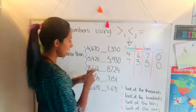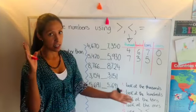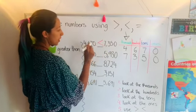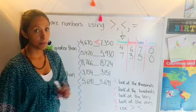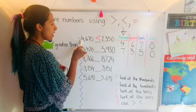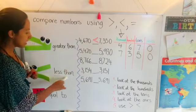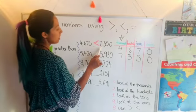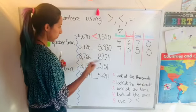So if seven is larger than four, is greater than four, the alligator will eat it. So 4670 is less than 7350. Let's try with the next one.